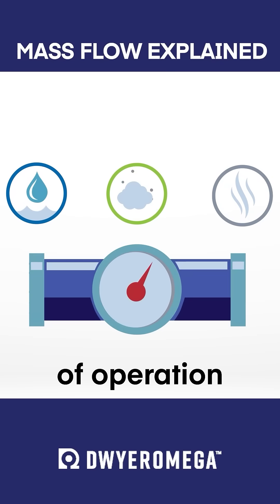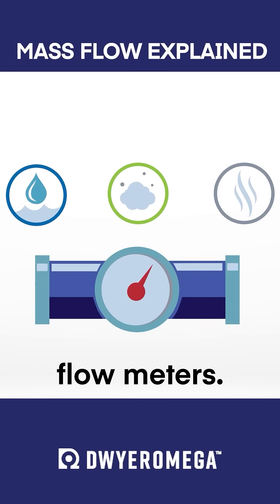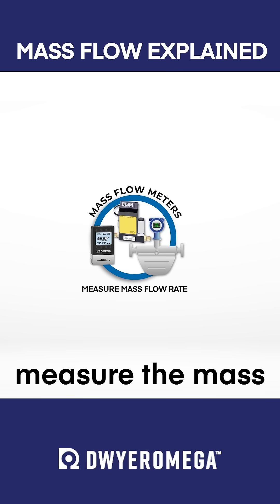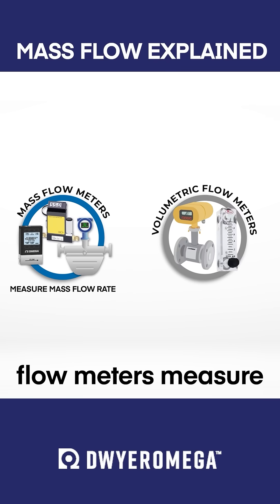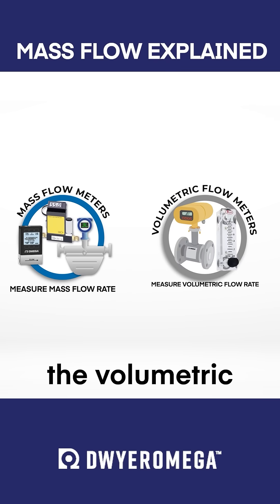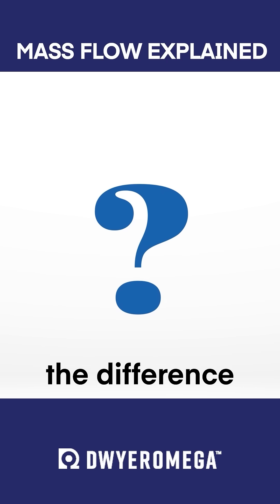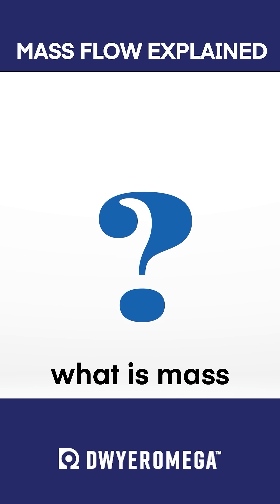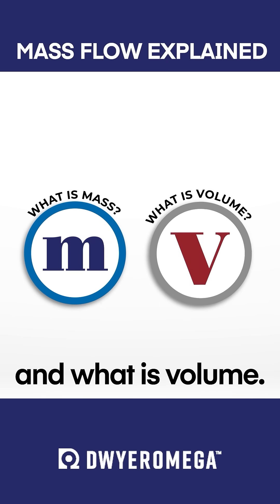There are two widely used methods of operation when considering flow meters. Mass flow meters measure the mass flow rate, and volumetric flow meters measure the volumetric flow rate. To understand the difference between the two, we need to discuss what is mass and what is volume.